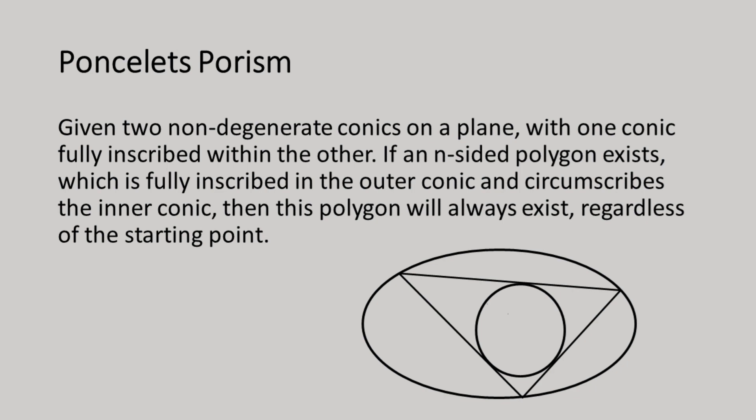In other words, if you can choose a point on the outer conic and draw lines tangent to the inner conic inscribed in the outer conic and eventually these lines meet again at our original starting point, then you have drawn Poncelet's Polygon, as we call it, which Poncelet proved will exist infinitely many times no matter where the starting point lies.